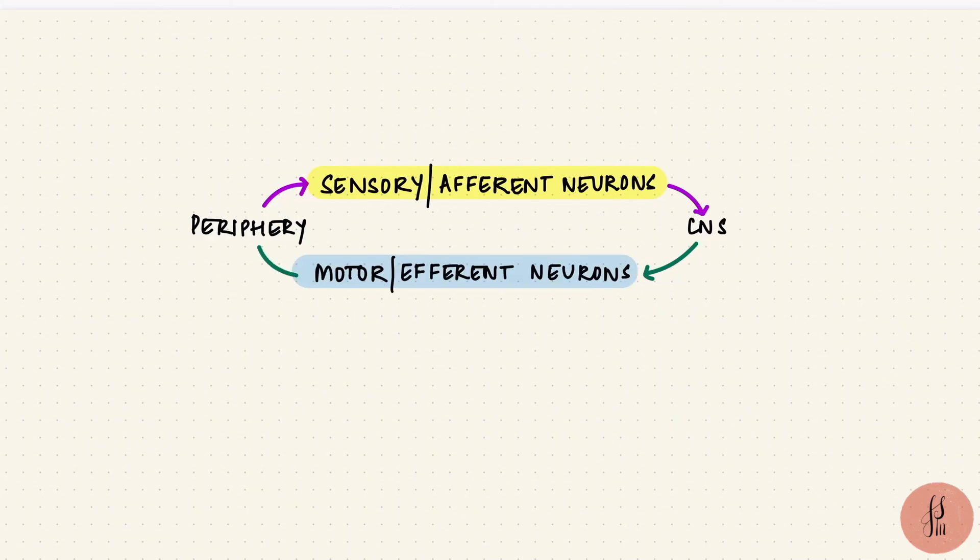Functionally, they could be sensory or afferent neurons, and motor or efferent neurons. Afferent neurons carry information from the periphery to the CNS, and efferent neurons from the CNS to the periphery. These are just a few examples, but there are so many different types of neurons.